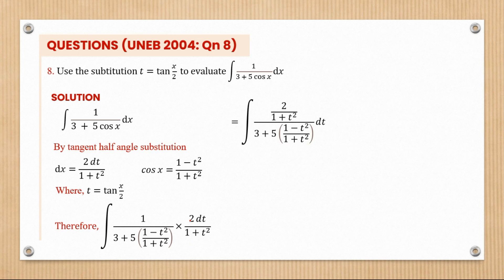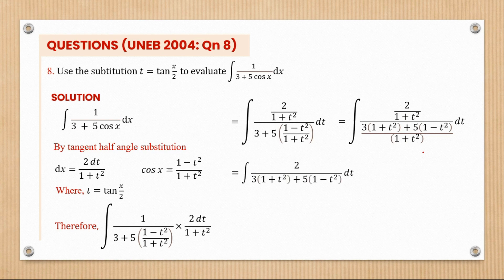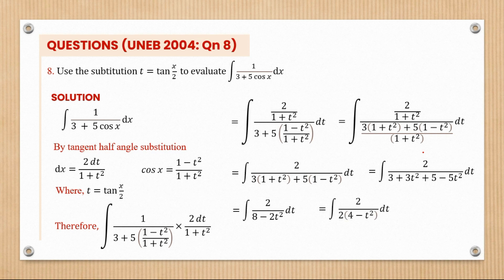Substituting these values, we can see the 2 at the top. At the bottom, we find the LCM, and after cancellation we're left with 2 over the combined denominator. Opening the brackets gives 3 + 3t² + 5 - 5t², which simplifies to 2/(8 - 2t²). Factoring out a 2 from the denominator, the 2s cancel, leaving the integral of 1/(4 - t²) dt.